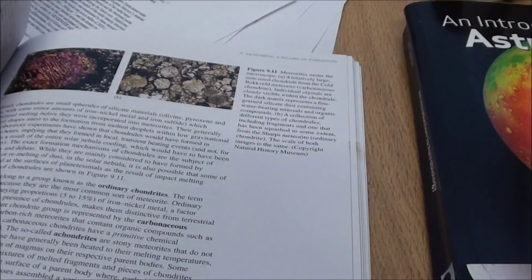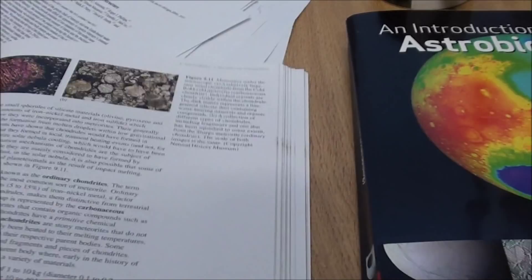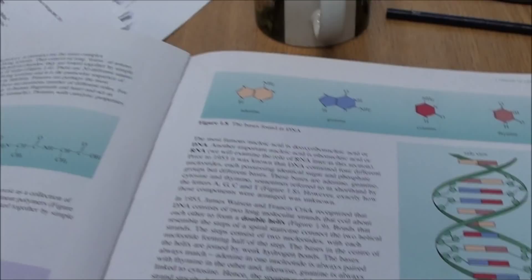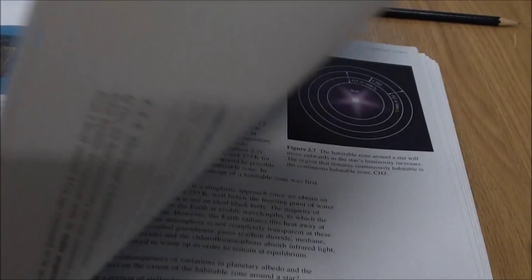Then we look at some minor bodies, and then we look at some meteorites. Sort of what you'd expect from an intro to the solar system.